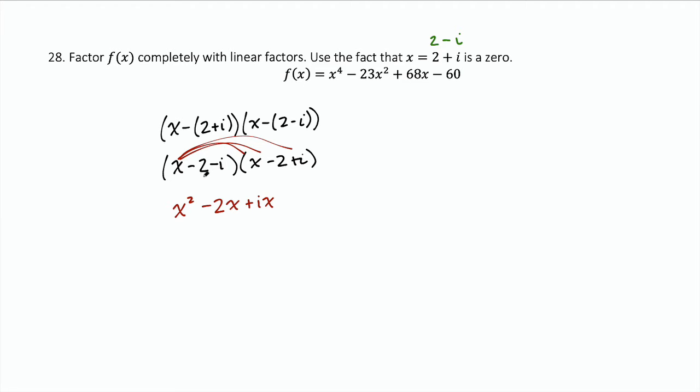And then negative 2 times x is negative 2x, negative 2 times negative 2 is plus 4, negative 2 times i is negative 2i. And then negative i times x is negative ix, negative i times negative 2 is plus 2i, and negative i times i is negative i squared.